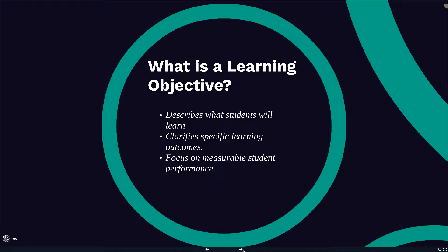What is a learning objective? A learning objective answers the question: what is it that your students should be able to do at the end of the class or course that they could not do before? A learning objective makes clear the intended learning outcome rather than what form the instruction will take.